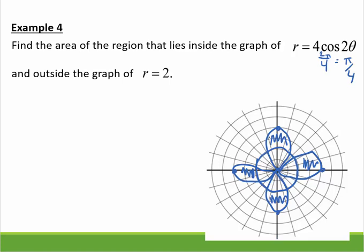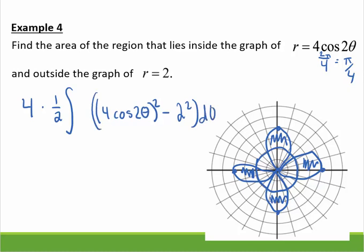So notice how these, if I drew it correctly, would be all equal and all symmetric. So I'm going to take 4 times the area of just one of them. And my outside function is (4 cos 2θ)² minus 2² dθ.